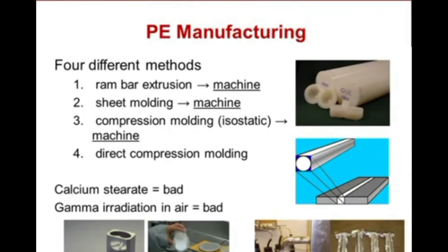When it comes to polyethylene manufacturing, two major categories exist: machining into the final shape or direct compression molding. Direct compression molding techniques generally have a better track record. Calcium stearate, an industrial lubricant previously added to polyethylene, turns out to be a bad idea. Gamma radiation in air is also a bad idea. The irradiation process needs to be done in an inert environment to avoid oxidation.